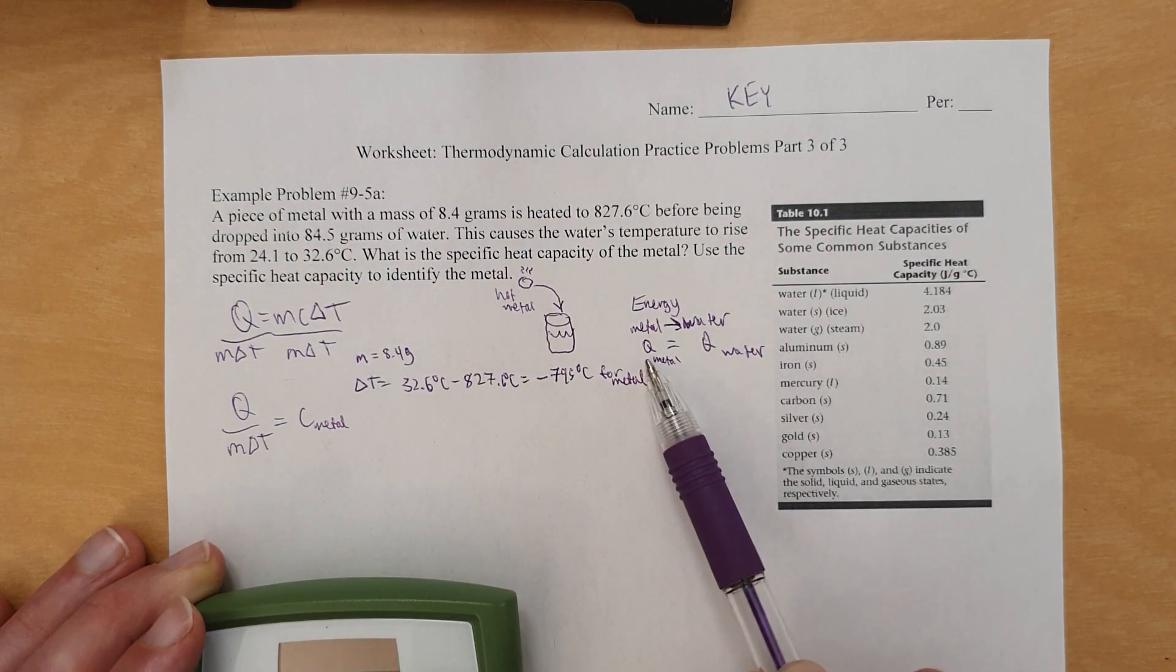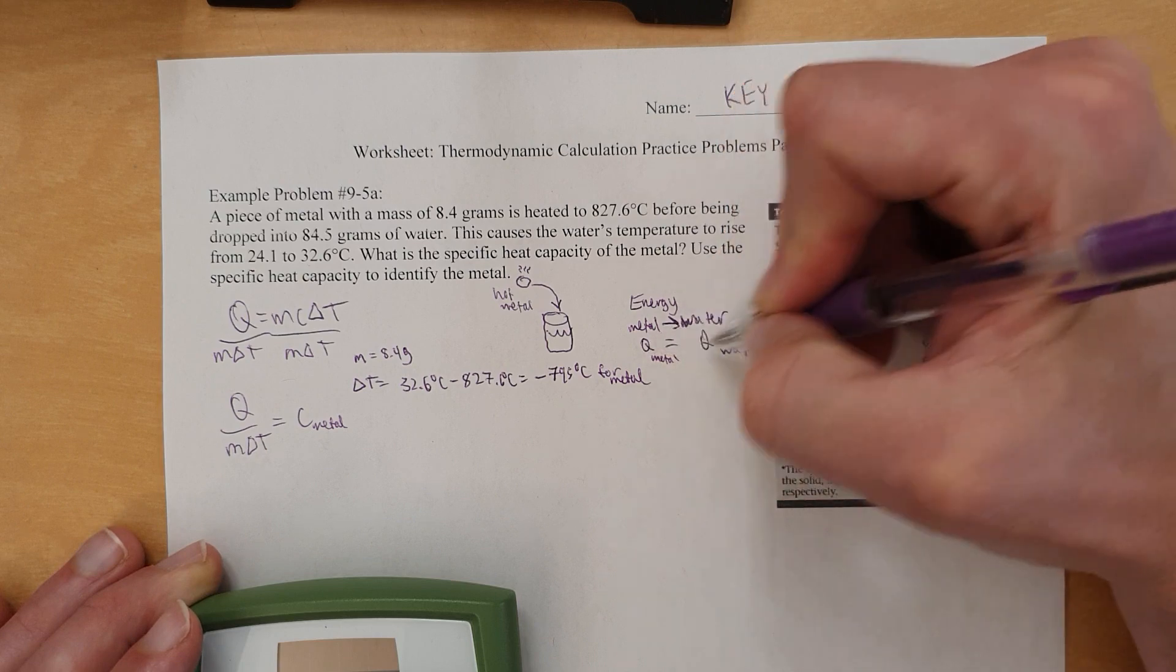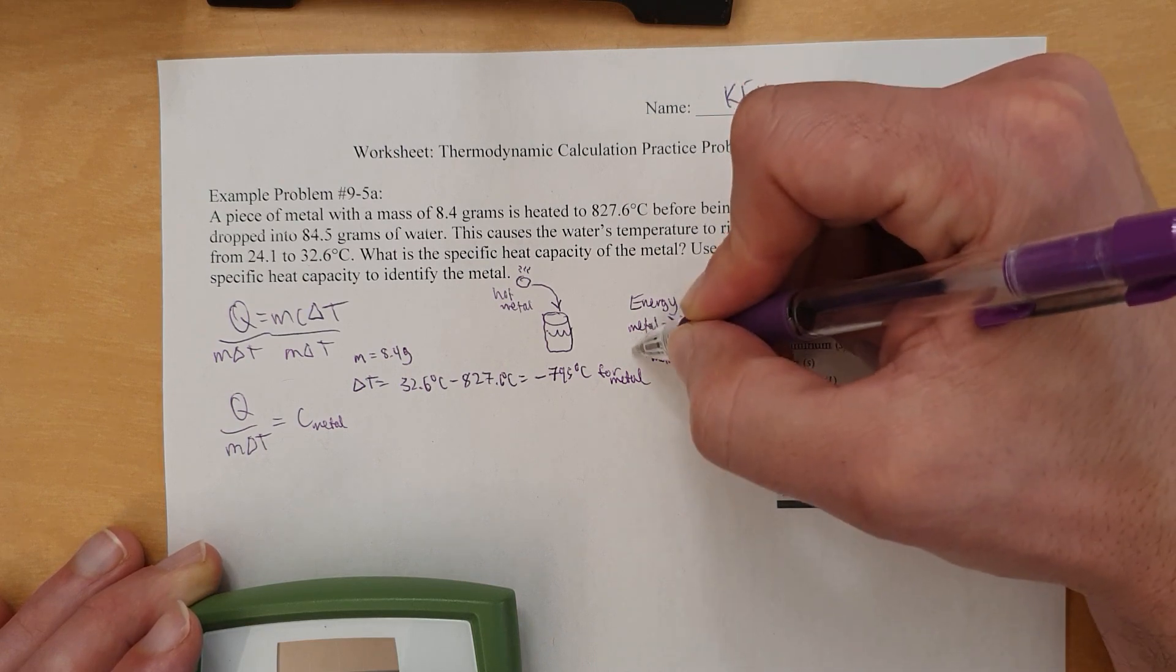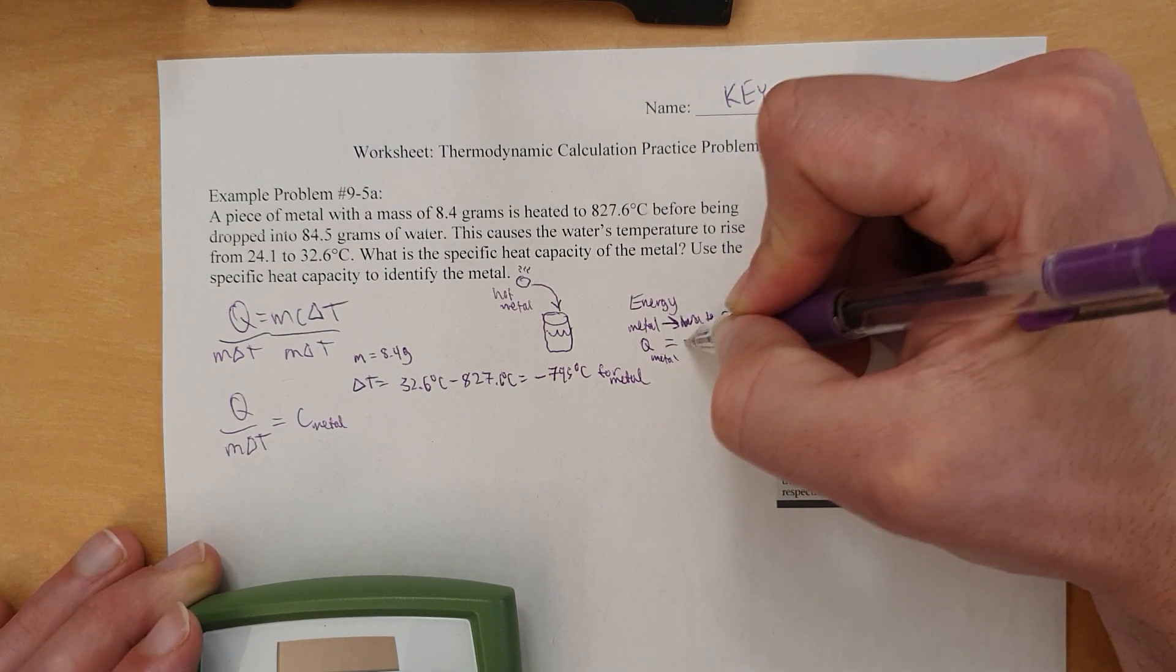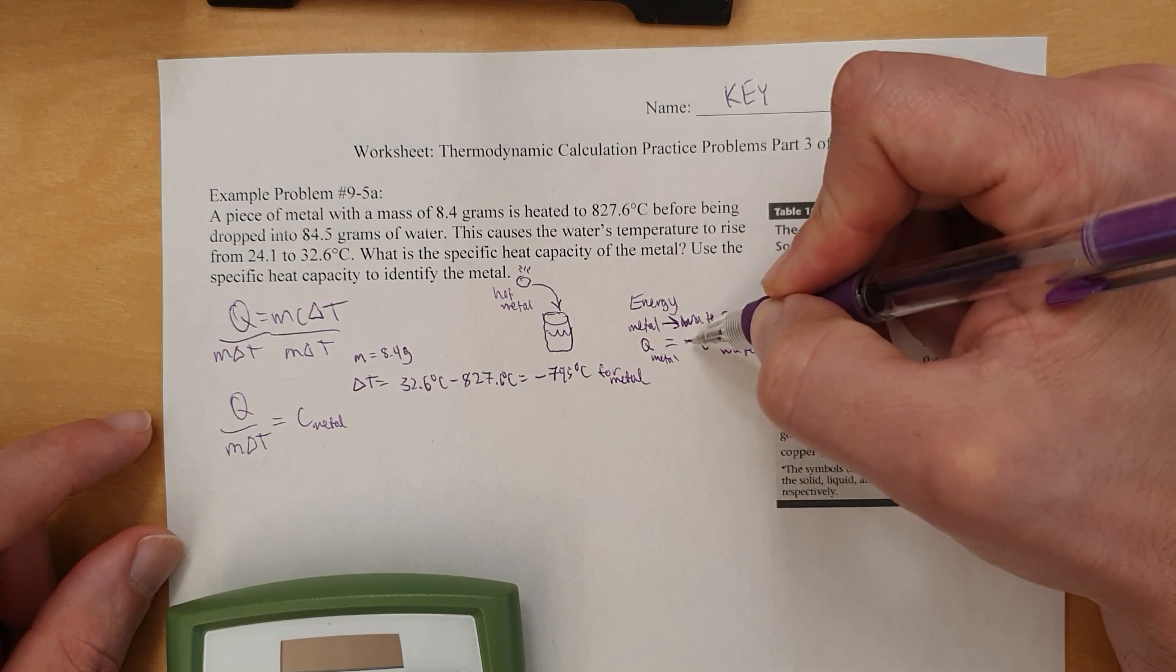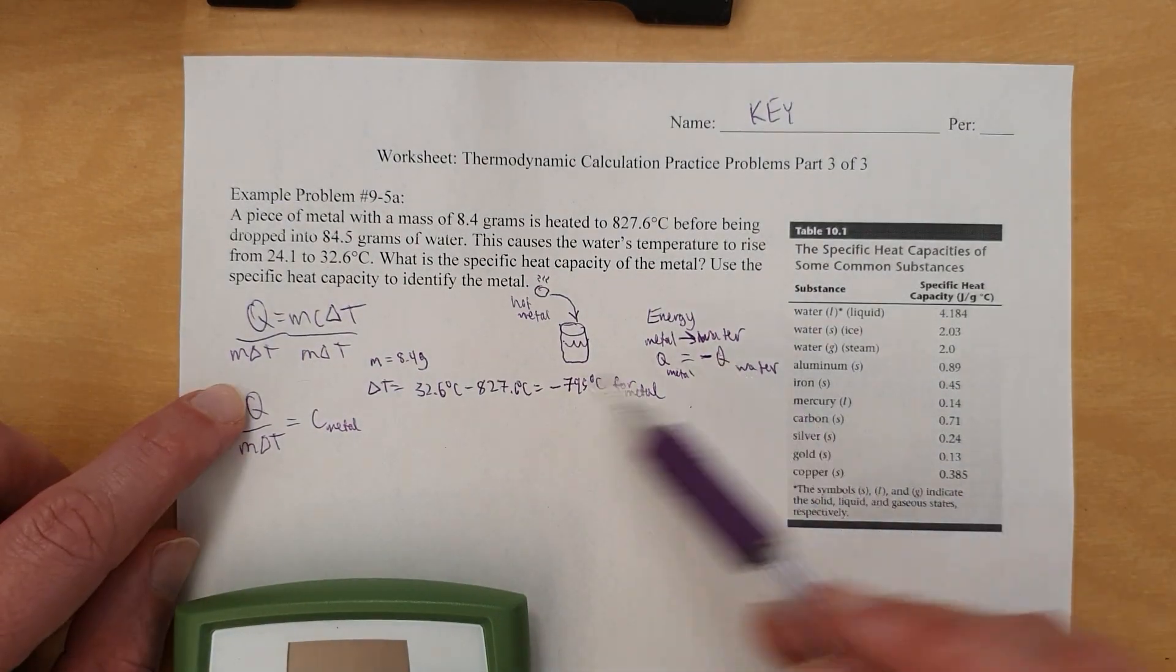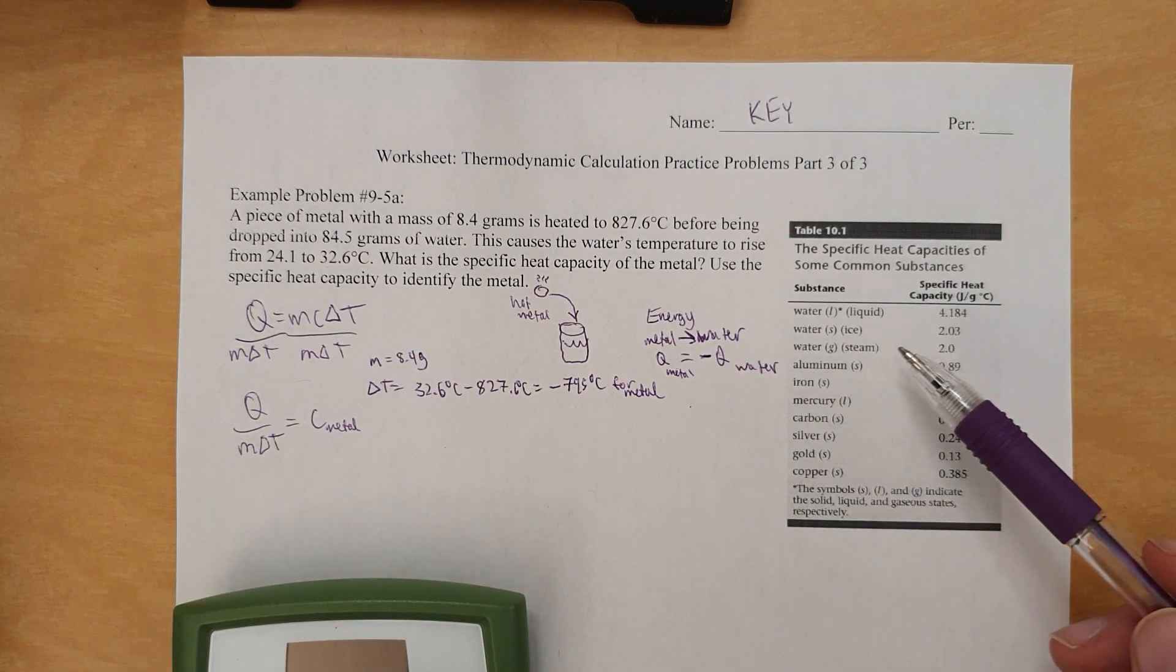Because every joule lost by the metal was gained by the water, which means if this is negative, this number is going to be positive. So they're opposites. So the Q of the metal is the opposite of Q of the water. So we're going to calculate the specific heat capacity of the water, sorry, the energy that the water gained, put a negative sign on it, and that negative number of joules will be the number of joules lost by the metal. And once we can put this Q right here, we'll already have M and delta T, and we can solve for C. Look it up on the chart and identify the metal.